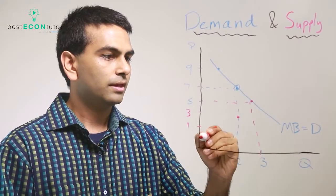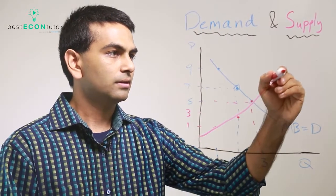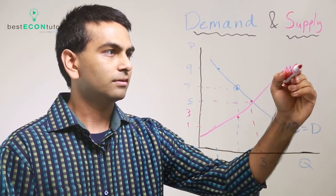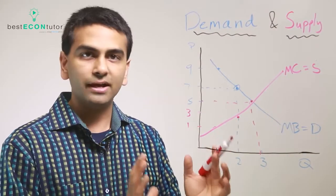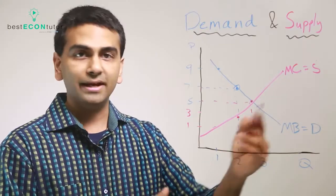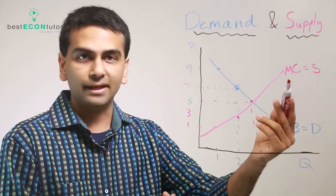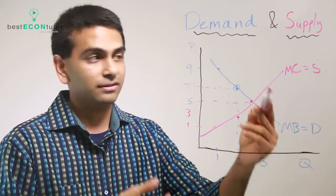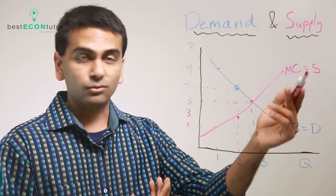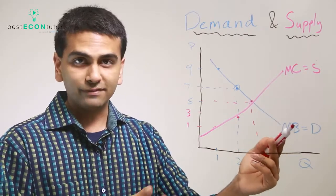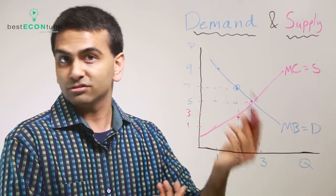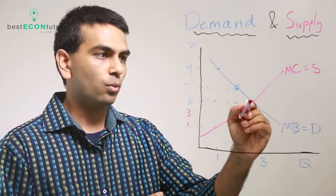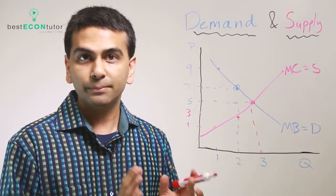This curve is our marginal cost curve, also known as supply. Demand and supply are really about marginal values. Supply is the marginal cost that the business owner has to worry about, and the demand curve is about the consumer—the benefit the consumer gets from consuming each item. Wherever they meet is called market equilibrium.